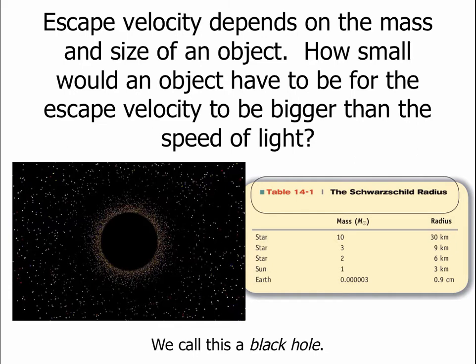Now, as I said, the escape velocity depends on both the mass of the object and the size. The more massive it is, the faster the escape velocity. The smaller it is, the faster the escape velocity. So you have to worry about this combination of the two. So let's take the Sun. The Sun's escape velocity is 630 kilometers a second.